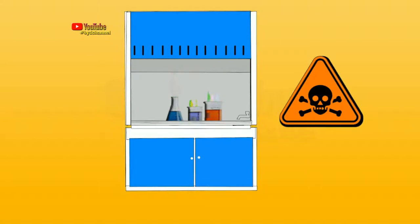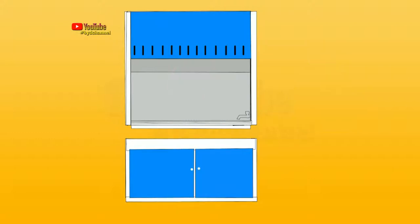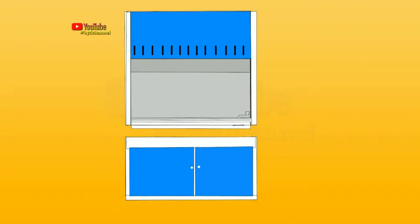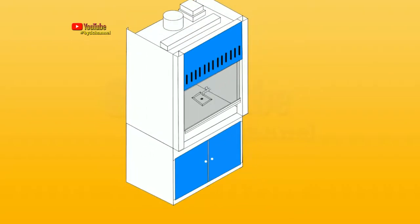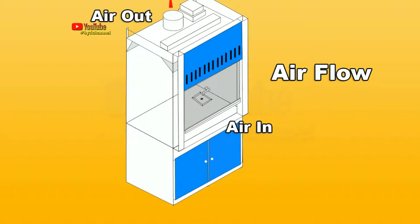The fume hood is basically an aerodynamic cleaning device that has a light cupboard at the bottom that functions as a place or table. The working principle of the fume hood: air is sucked from the front door and then the blower releases it into the filter.